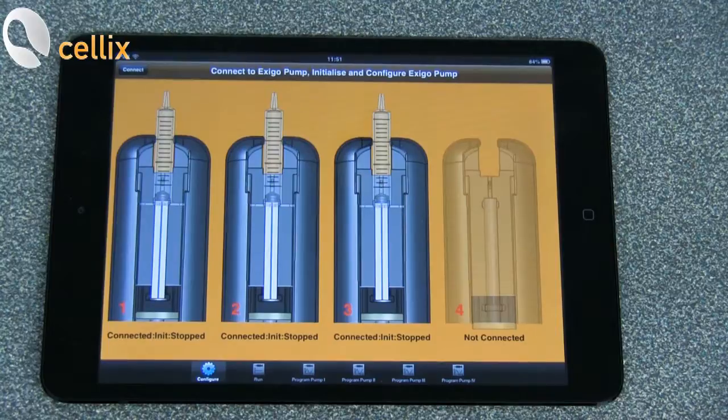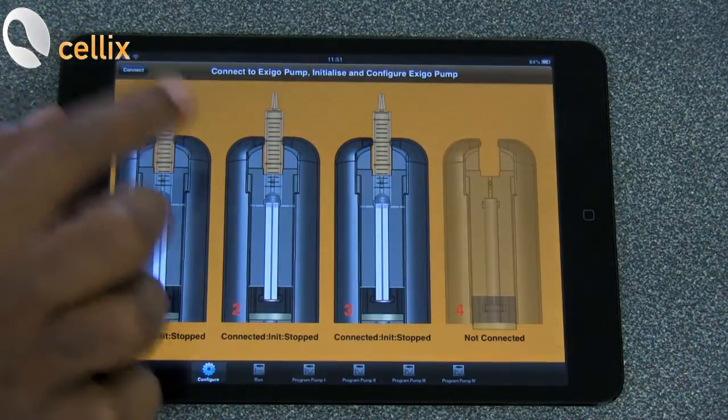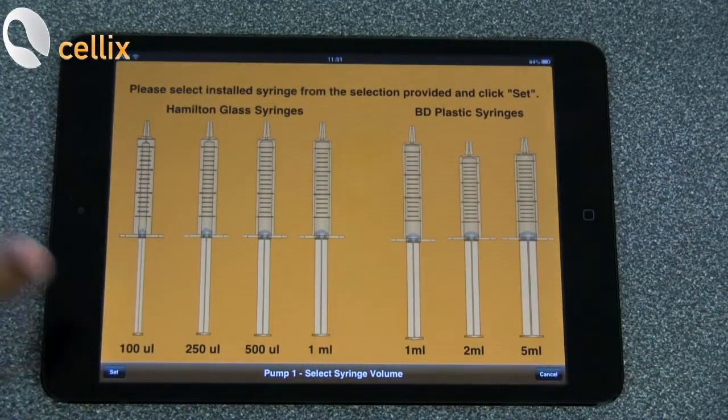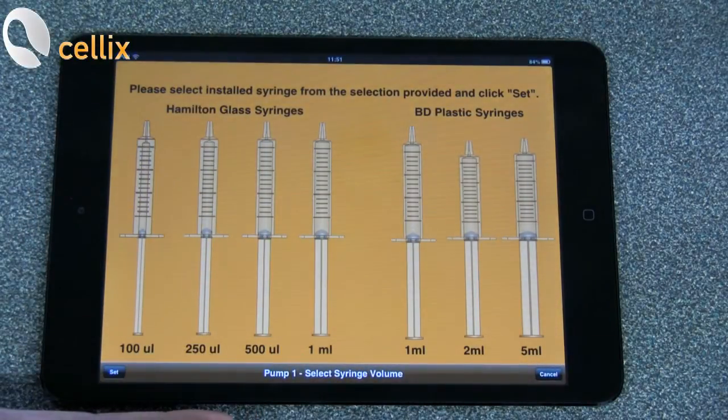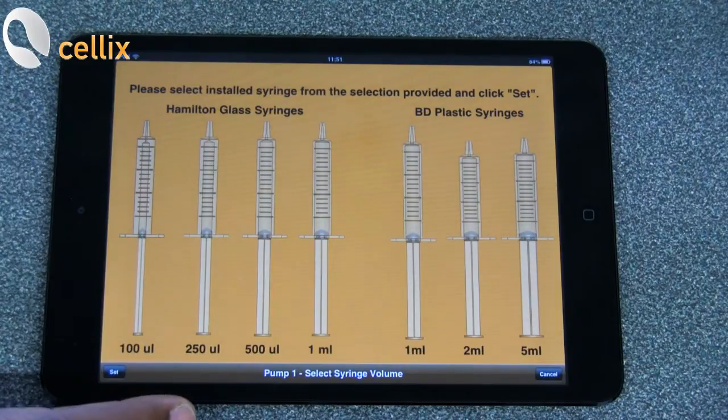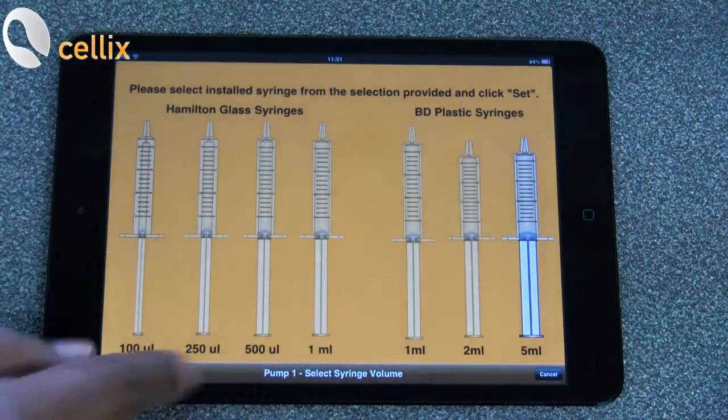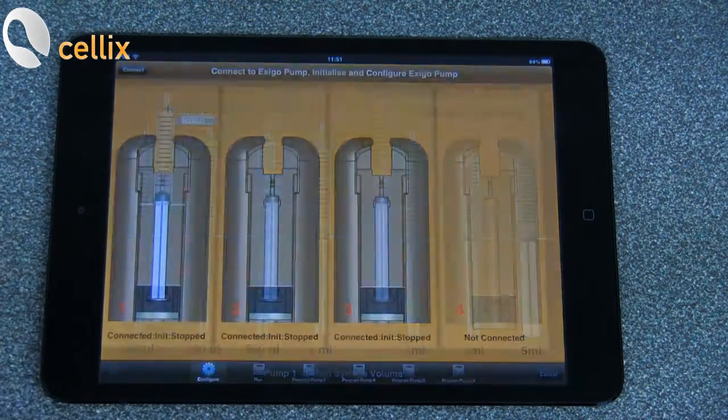The next step is to select the syringe. To select the syringe, you double tap on the syringe and it displays various syringes. Here, we are going to use a 5 ml plastic syringe. So click the 5 ml syringe, click set.